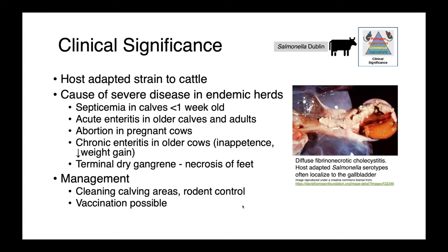When reading about salmonella, you'll frequently see it noted with the genus italicized and the serotype in capital letters, not italicized. Salmonella Dublin is one which is host adapted to cattle and a cause of severe disease in endemic herds. In young calves we can see septicemia, acute enteritis in older animals, abortion in pregnant cows, and chronic losses in older animals — including chronic enteritis with inappetence, decreased weight gain, decreased feed conversion, and terminal dry gangrene resulting in necrosis of the feet.